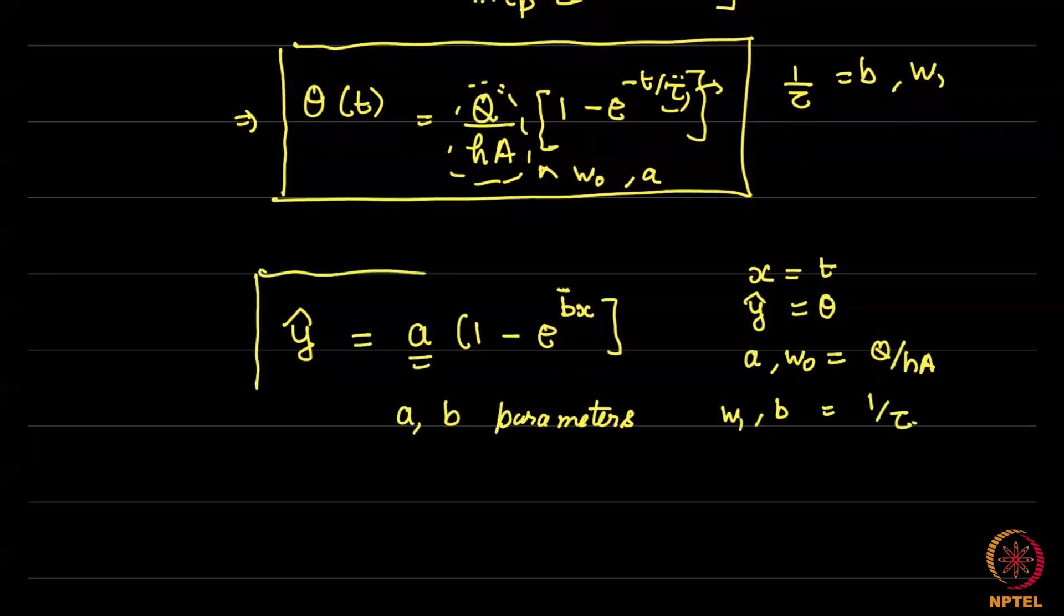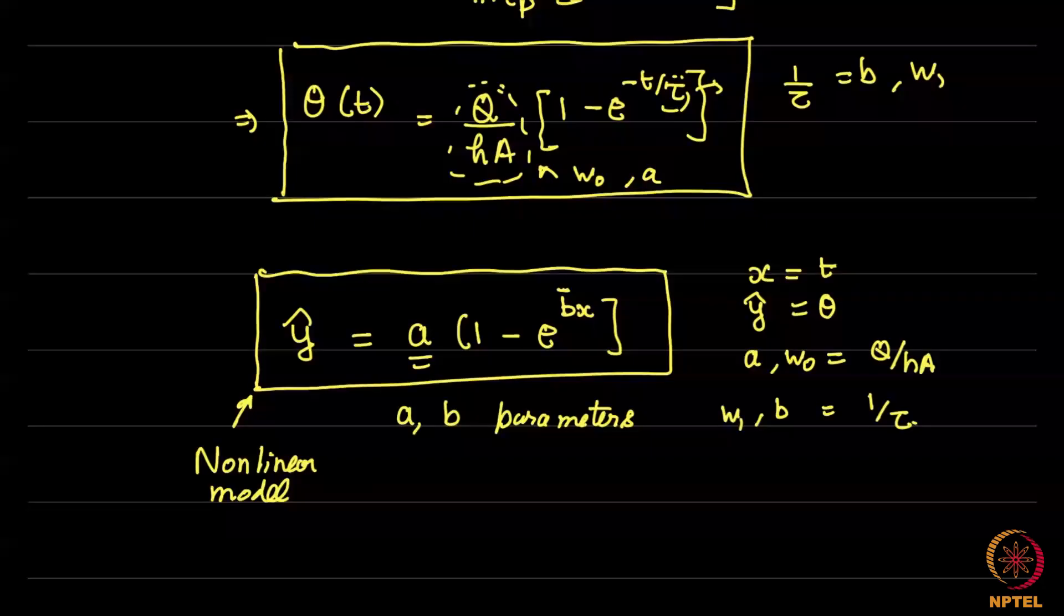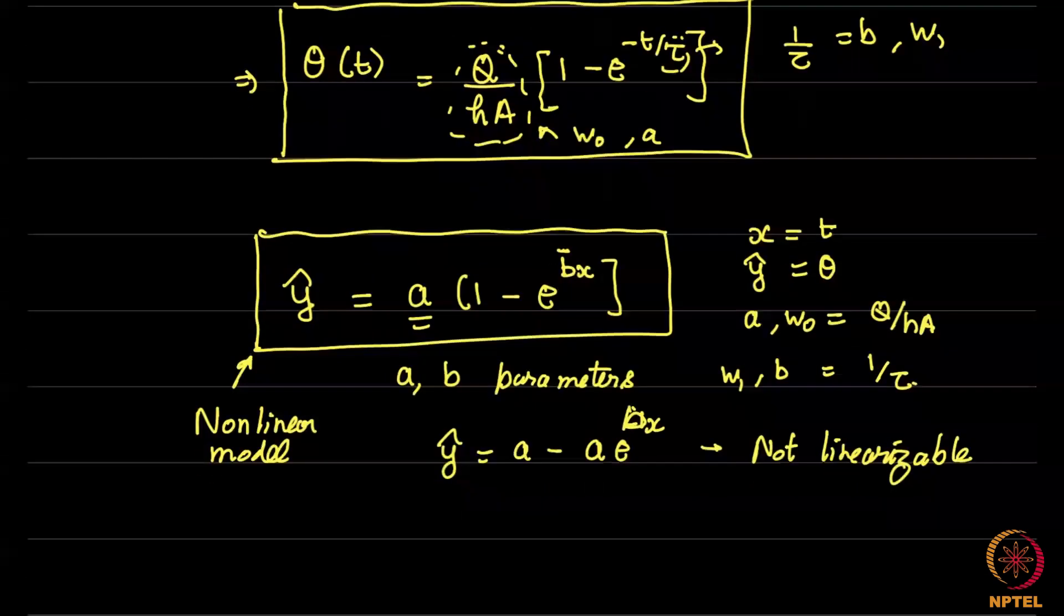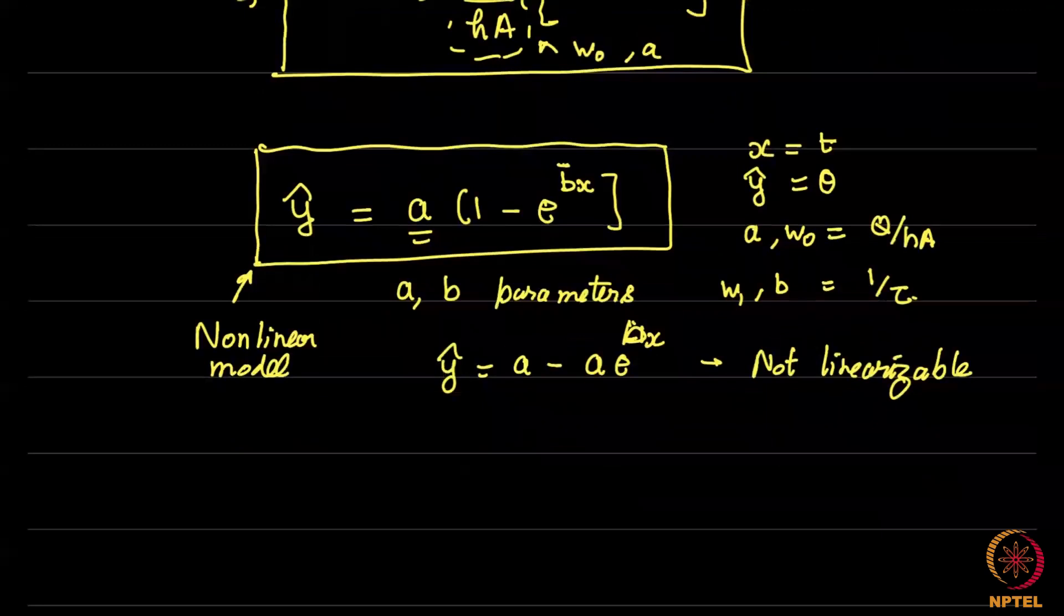Y hat is theta, our predicted variable. And a or w0 depending on what we find convenient is Q over HA and 1 over tau or B or W1 is 1 over tau. So, these are the parameters of the problem. A and B are parameters. This is what we try to find out in our inverse solution. Now, the deal here is that this model, it is a non-linear model. What is meant by non-linear? Non-linear means non-linear in the parameters. That is, this is not linear in A or B. Notice that it is not linear in either A or in B. Or you can treat it to be somewhat linear in A in that you can write this as A minus A e to the power bx. But this is not linearizable.